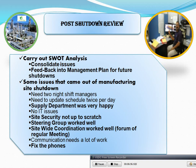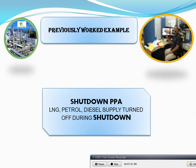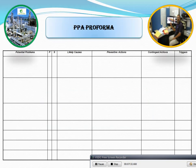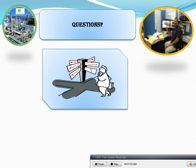Next questions to explore: 1. Supply management was very happy to know its issues. 2. Site security is not up to scale. 3. Steering group worked well. 4. Site-wide coordination worked well. 5. Regular meetings format worked well. 6. Communication needs a lot of work — fix the phone. 7. Set-off PPA covers energy, petrol, diesel, and supply internet during set-off. 8. PPA is for performance. 9. PPA is the potential problem — preventive action, contingent action, and tri-guard. 10. These five areas are important during set-off for reporting.